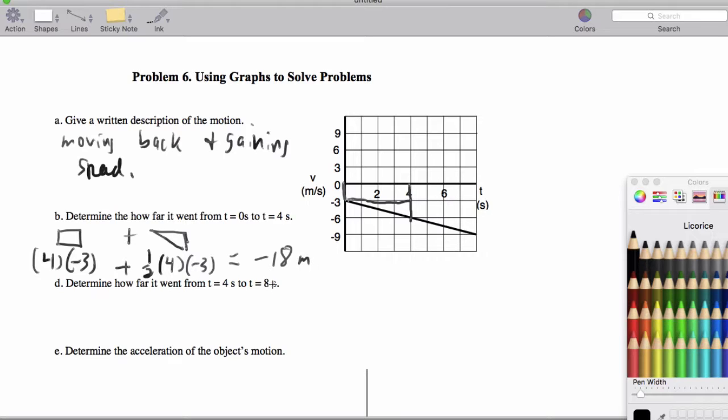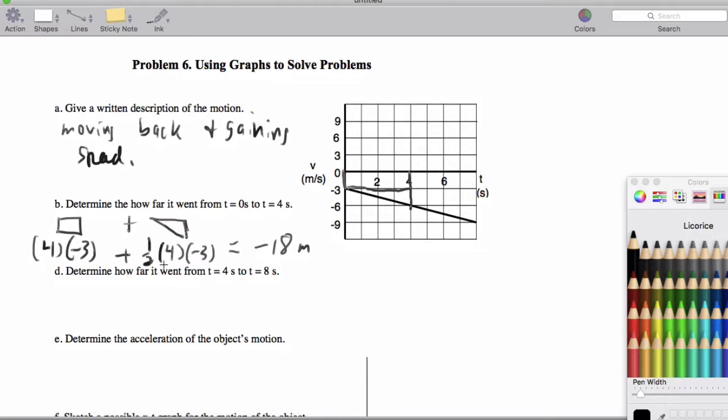So it went backwards 18 meters. Now how far did it go from four to eight? A similar idea. I'll do a rectangle plus a triangle. So that'll be negative six times four plus one half.